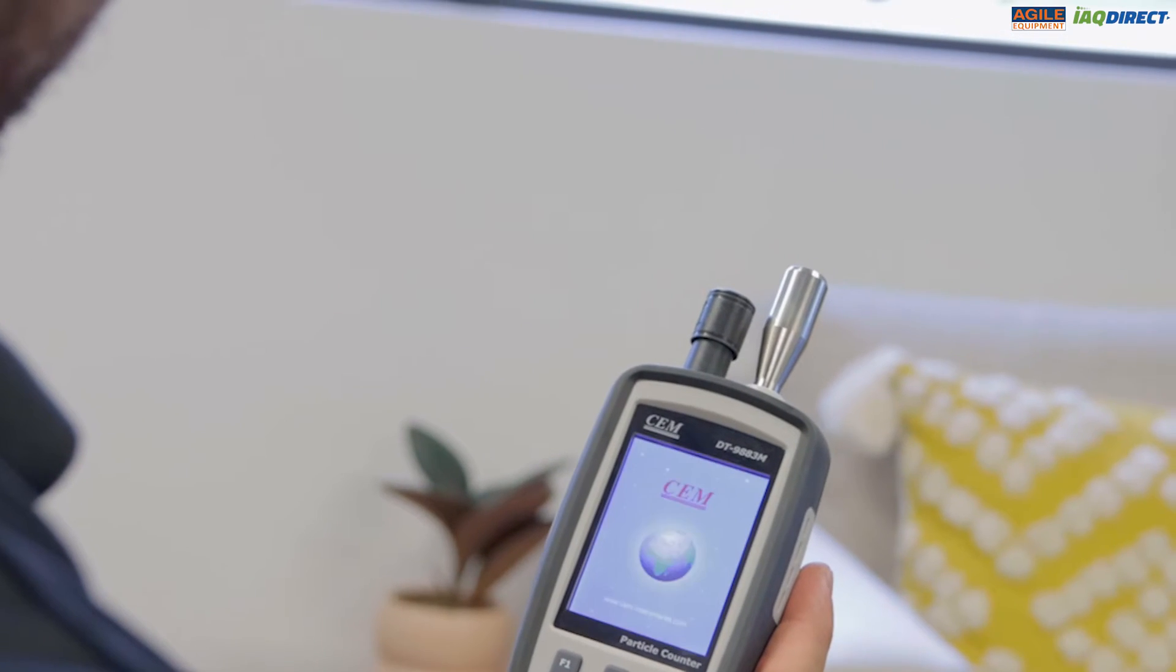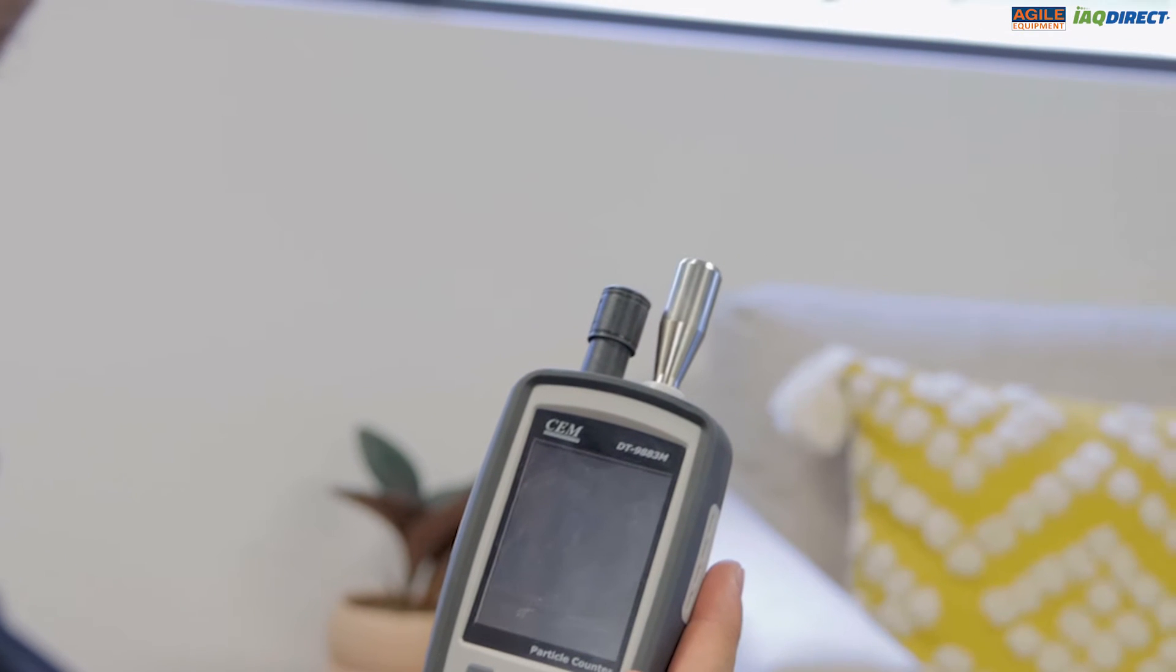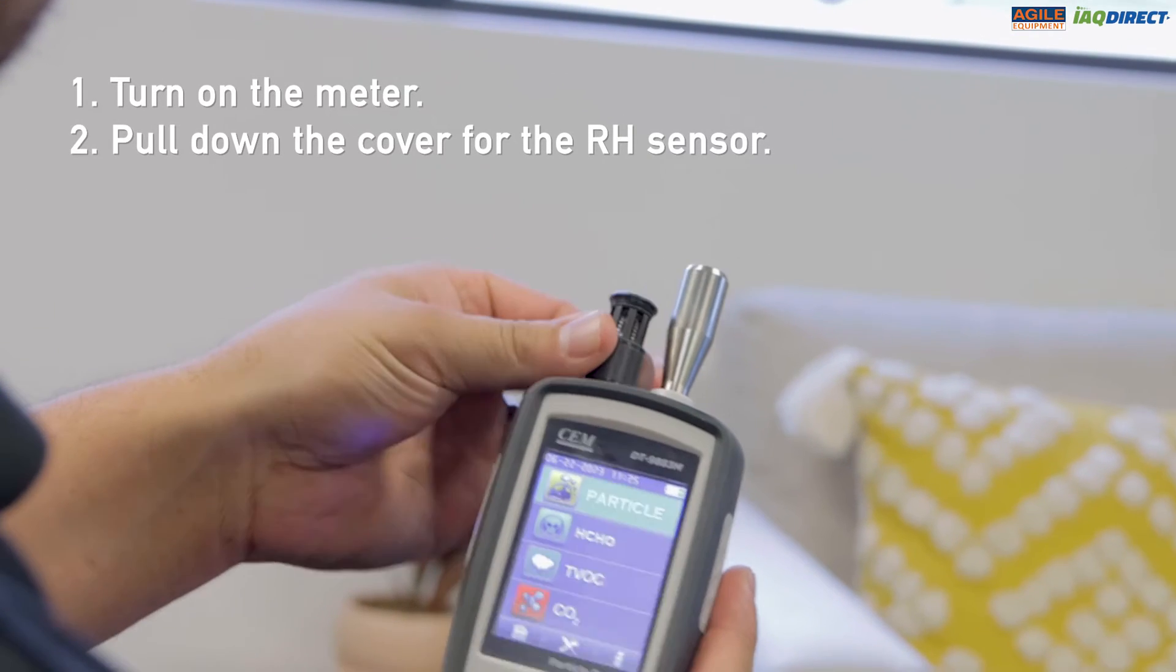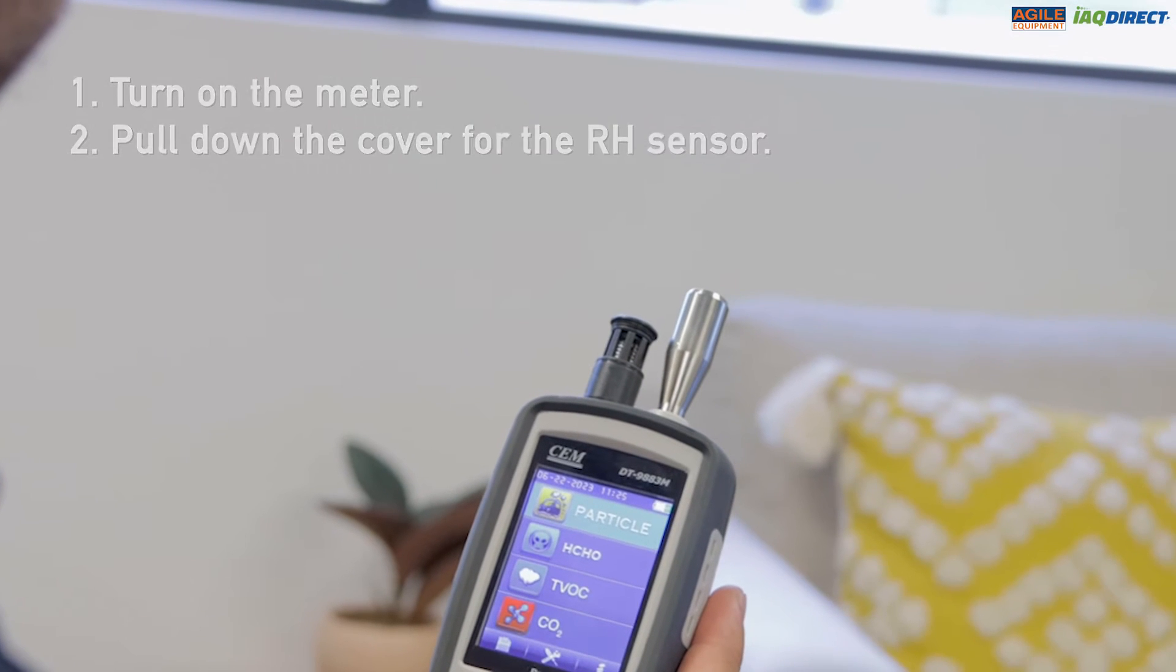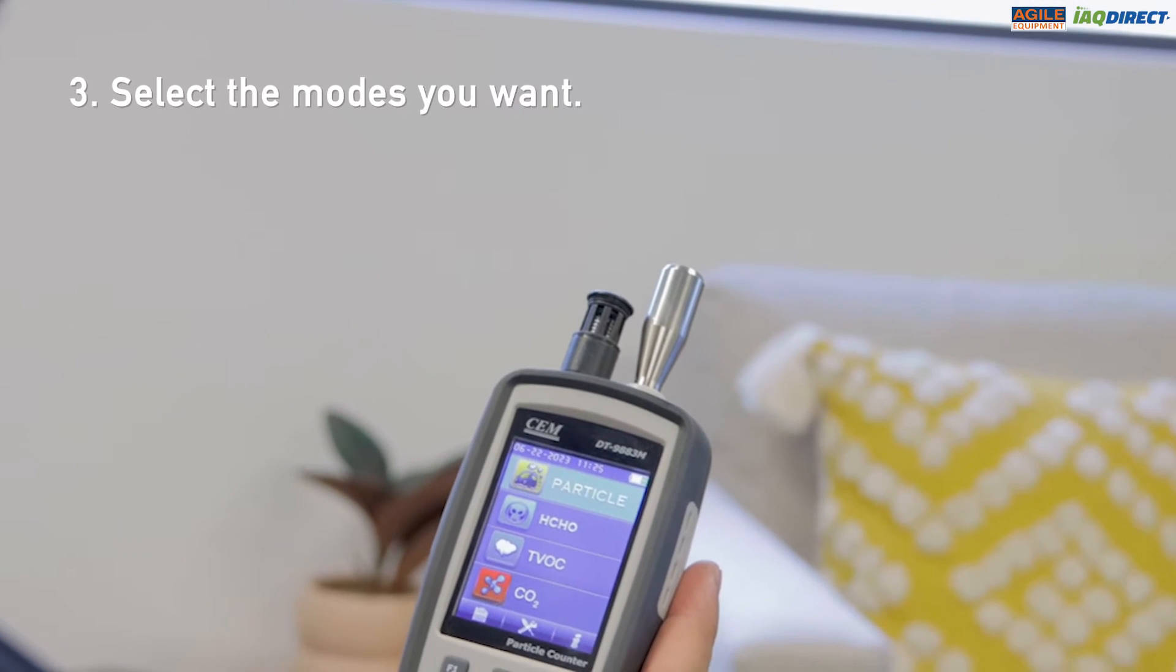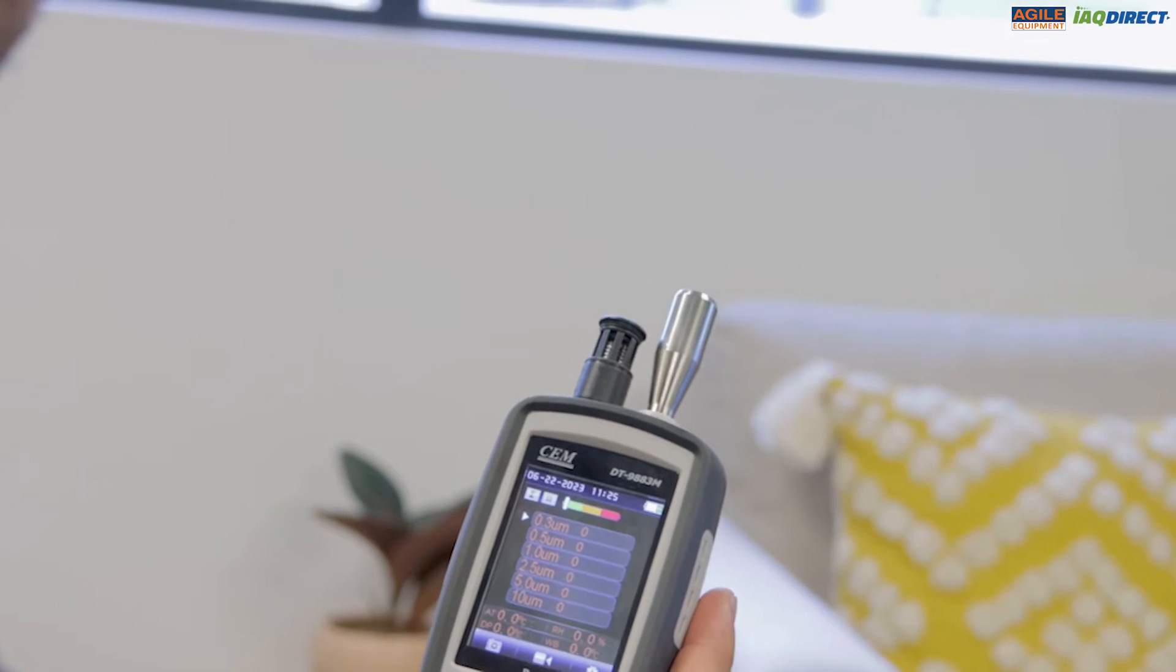For this demonstration, we will be using the DT9883M. After turning it on, ensure you pull down the cover of the RH sensor. Using the buttons, select the mode you want. In this case, we're going to look at the particle counting mode.